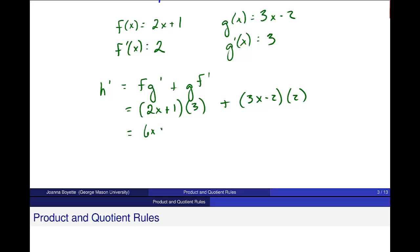And then I'm going to go ahead and come down and get a little more space and just simplify this. This is 6x plus 3 plus 6x minus 4. And I get, I think, 12x minus 1. Is that what you guys get? So that is the product rule that we're using.